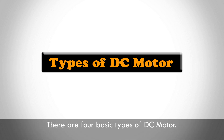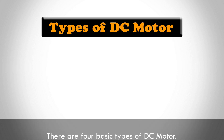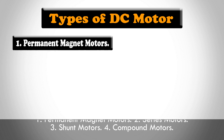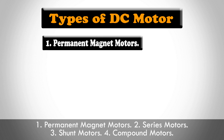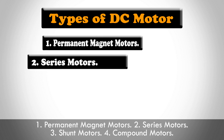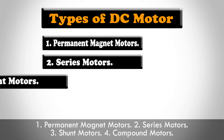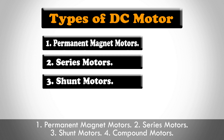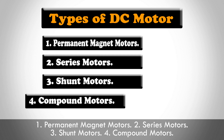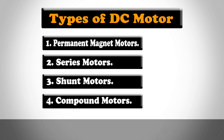There are four basic types of DC motor: 1. Permanent magnet motors, 2. Series motors, 3. Shunt motors, and 4. Compound motors.